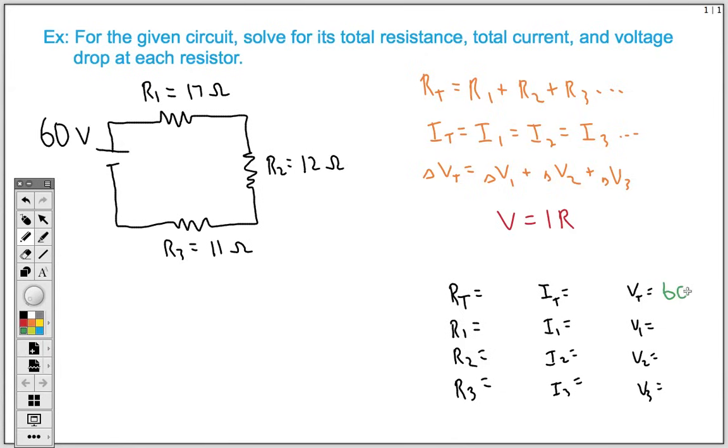We know that our total voltage is 60 volts, so we're going to put that in here, 60 volts. And we know that our resistor 1 is 17 ohms, resistor 2 is 12 ohms, and resistor 3 is 11 ohms. And so our objective then is to solve for all of these open areas.